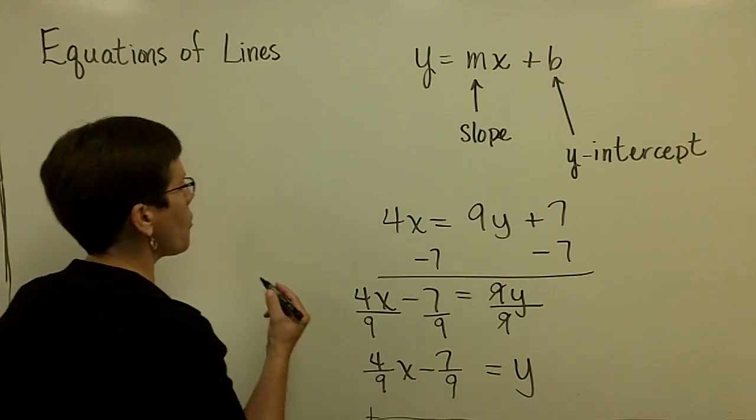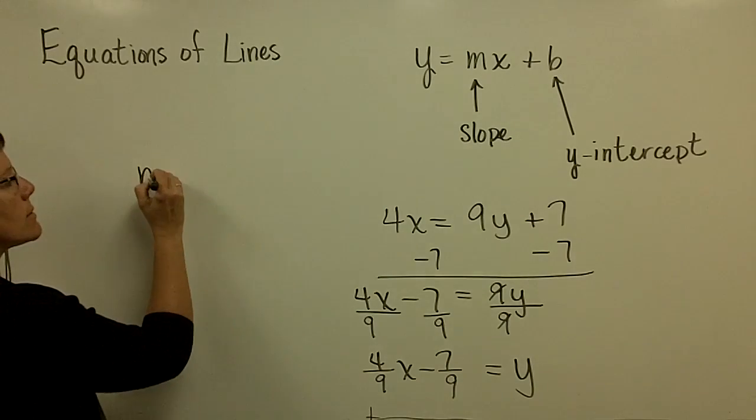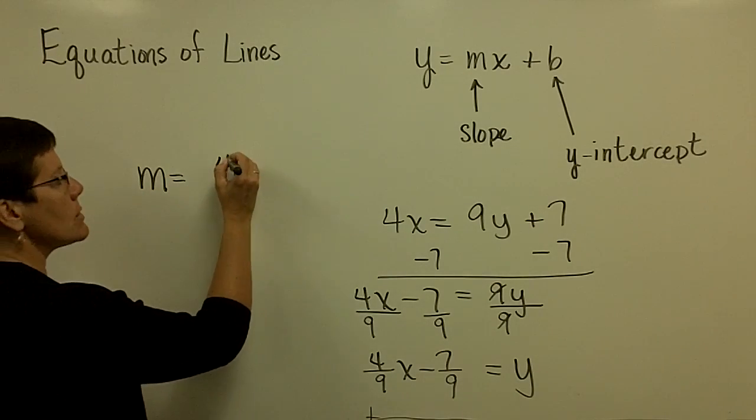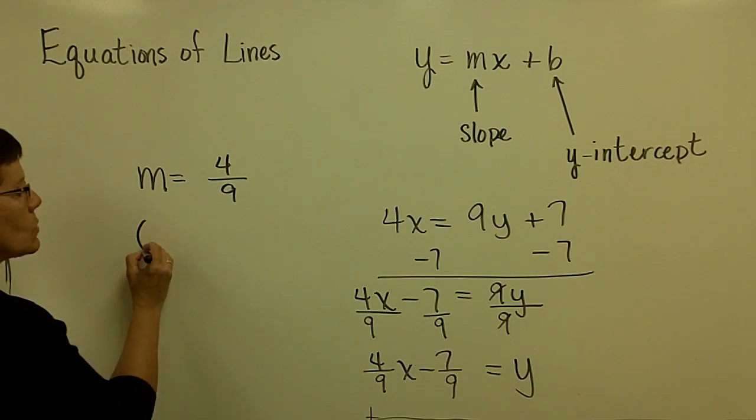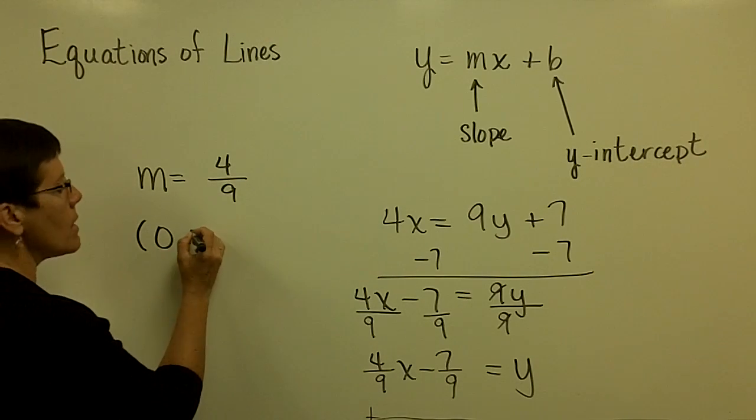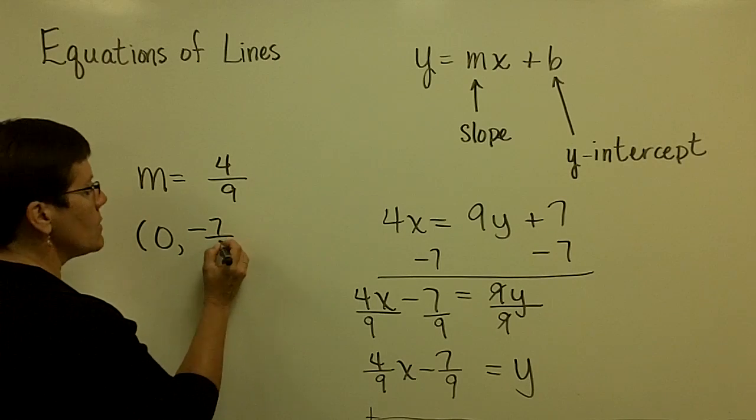This is in slope-intercept form, and you would say to me that the slope of this line is positive 4 over positive 9 - that's its change in y over change in x. The y-intercept is 0 comma negative 7 ninths. The negative sign can be with the numerator,